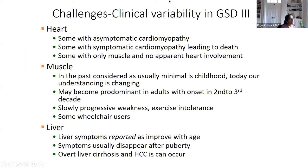There is a lot of variability in GSD type 3. The heart muscle can have thickening without symptoms, or it can be symptomatic and lead to death. Some patients have only skeletal muscle involvement with no apparent heart involvement. Heart rhythm disturbances can also occur. Regarding skeletal muscle, our understanding is changing — in the past, it was considered minimal in childhood, but today we know muscle involvement occurs early, as early as the first few years of life.